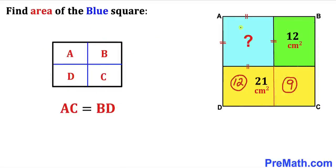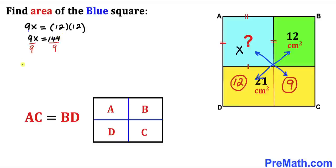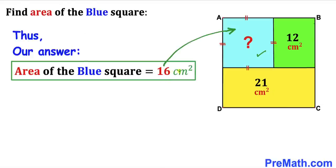And here's our final step. Let's call the area of this blue square X. We are going to use the crisscross concept — multiply these two areas and likewise multiply these two areas. Therefore X times 9, we can write 9X equals 12 times 12. So 9X turns out to be equal to 144. Dividing both sides by 9, our X value turns out to be 16 centimeter square. Thus the area of this blue square turns out to be 16 centimeter square.